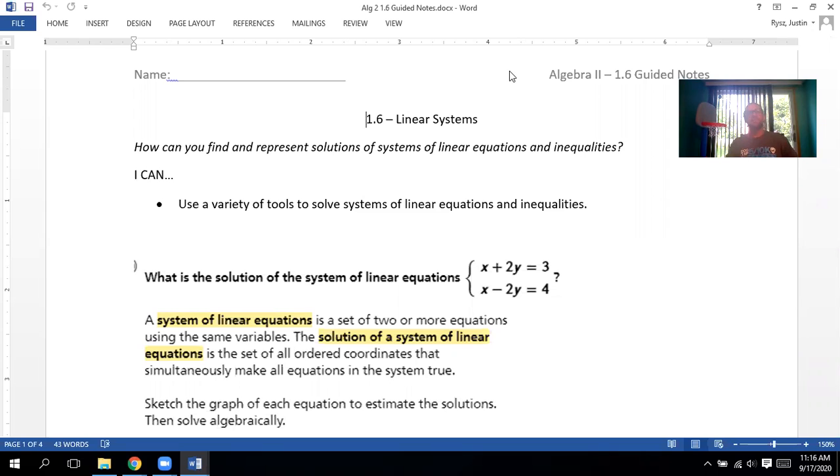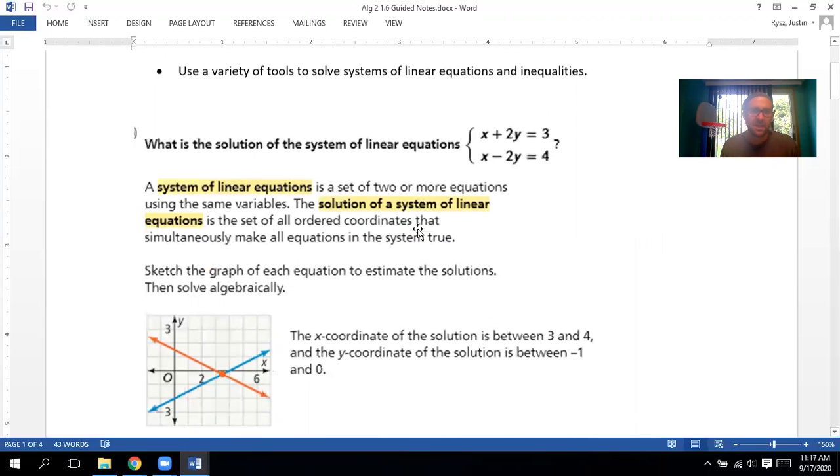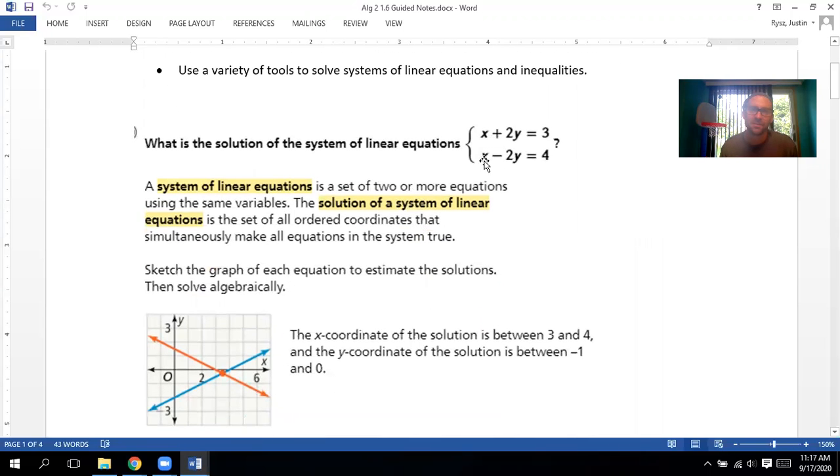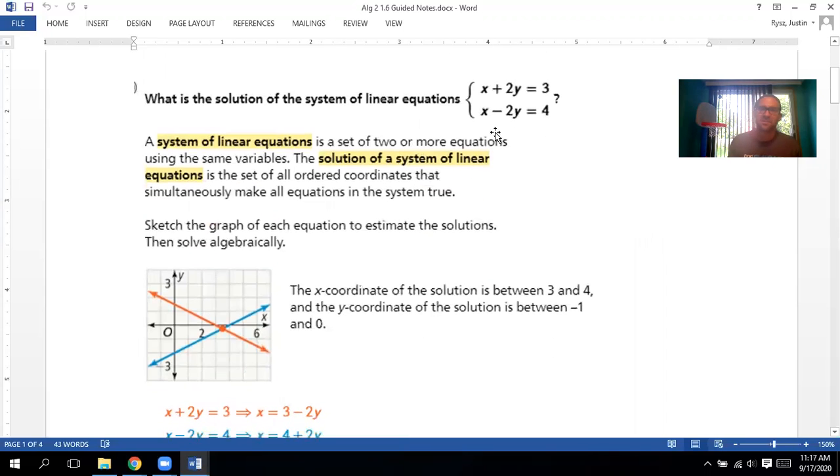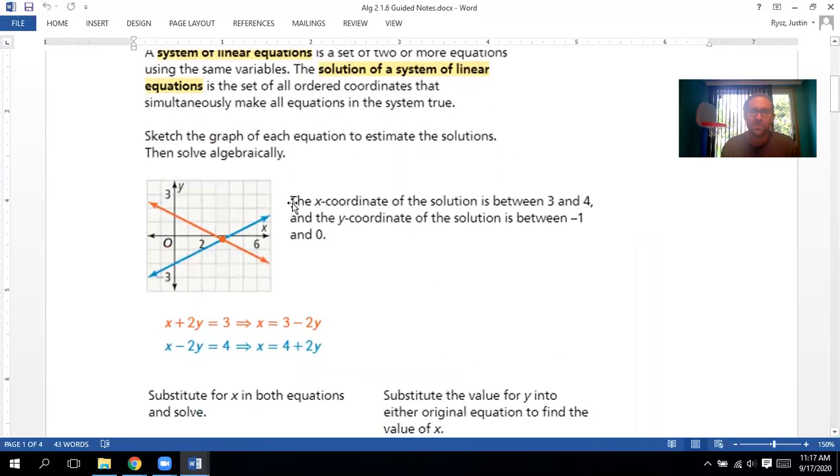So in this 1.6, we're going to look at linear systems. We're going to be solving systems of linear equations, and we'll talk about linear inequalities too. Basically the same thing. When it comes to finding a solution of a linear equation, we want to find the point that satisfies both the top equation and the bottom. So if we have this system of linear equations here, we got x plus 2y equals 3 and x minus 2y equals 4. We're going to try to find the point that when we plug x and y into the top, it's true, and that same x and y when we plug into the bottom is true.